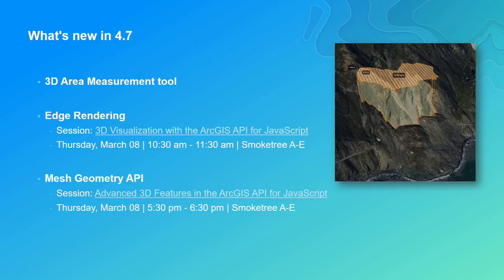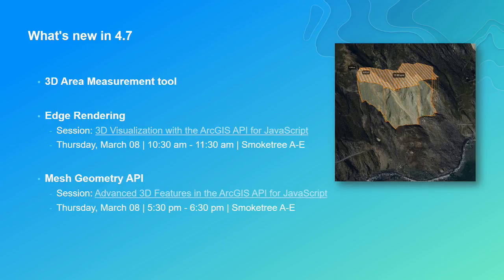In 4.7 is also the 3D area measurement tool, similar to what Jesse showed with the direct line measurement. You tap a few points in the scene and it creates a 3D or 2D measurement of the area, lifted in 3D. This also works on building surfaces — for measuring a facade or roof area, it works in 3D planes, not only on the ground. A really cool feature coming is edge rendering — covered in detail in a session tomorrow morning at 10:30.